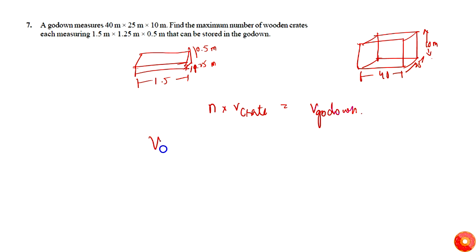Volume of crate will be equal to - we know that volume of any cuboid will be simply length into breadth into height. So here it will be 1.5 into - sorry - 1.25 into 0.5. So this is simply 1.5 into 0.75. 1.75 into 1.25, that is simply 3 by 4. 1.25 into 3 is simply 3.75 by 4.